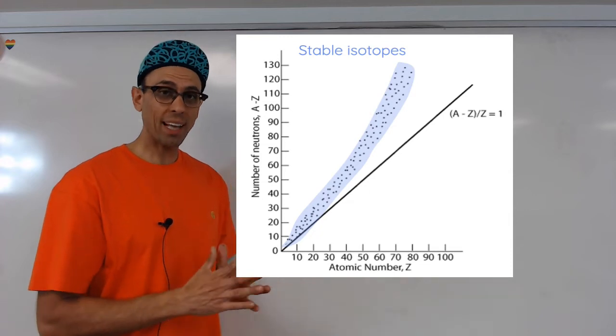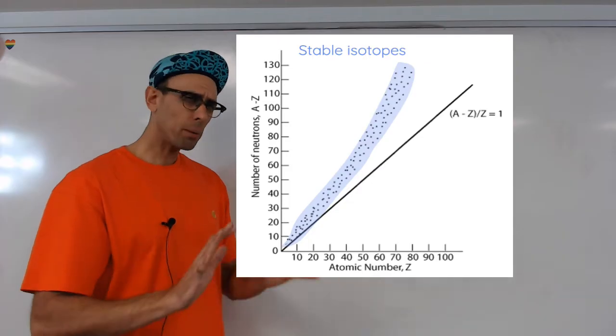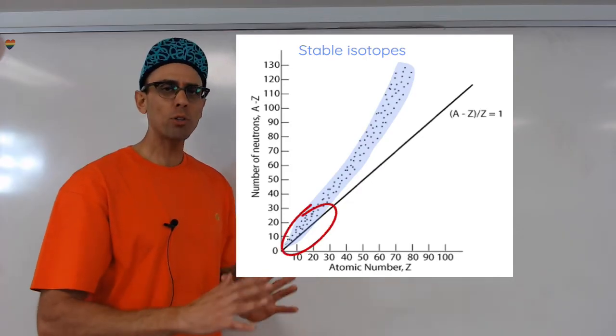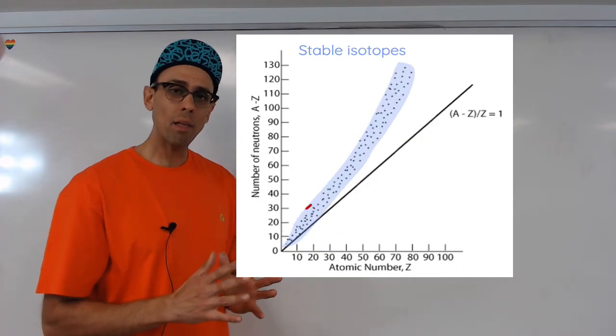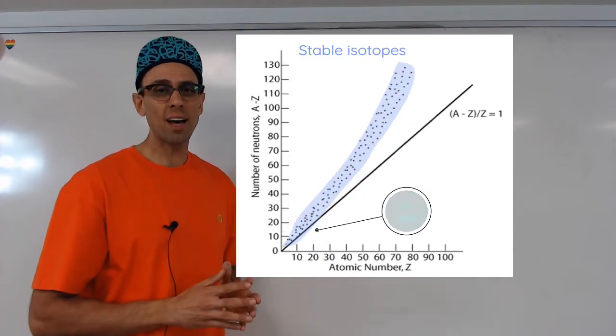You'll also see that there's a solid line, and that line represents a ratio of one proton to one neutron. Now interestingly, for smaller atoms, in other words atoms with low atomic numbers, actually between about 1 and 20, we see that the number of protons and neutrons when we compare them it's about a one-to-one ratio. In other words, those dots are very close to the solid line.